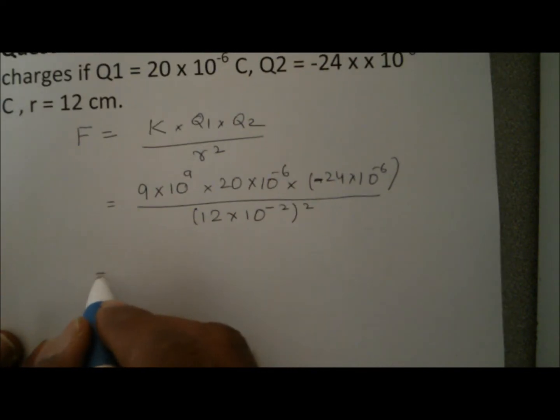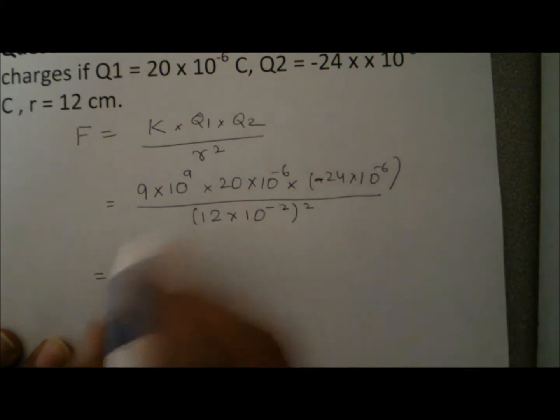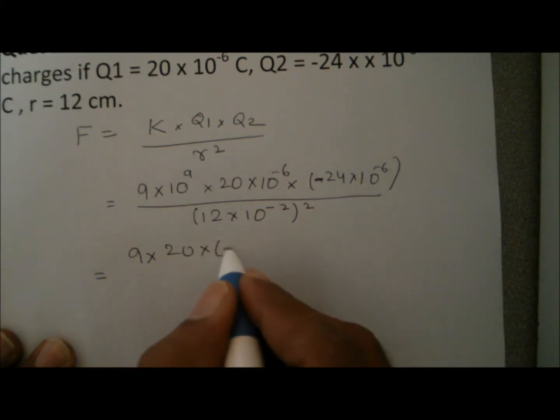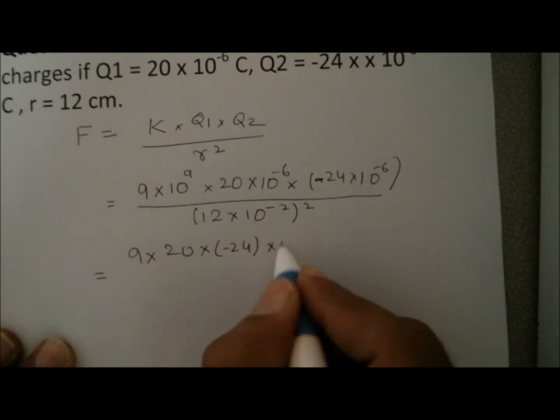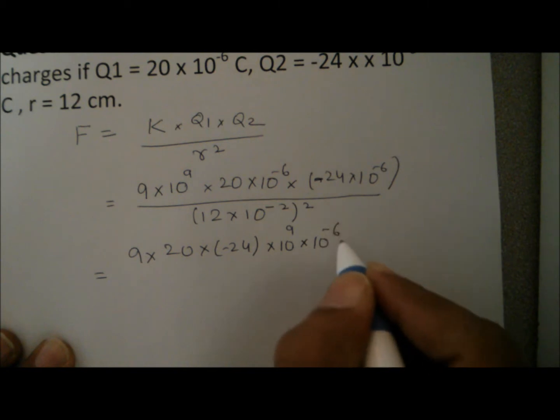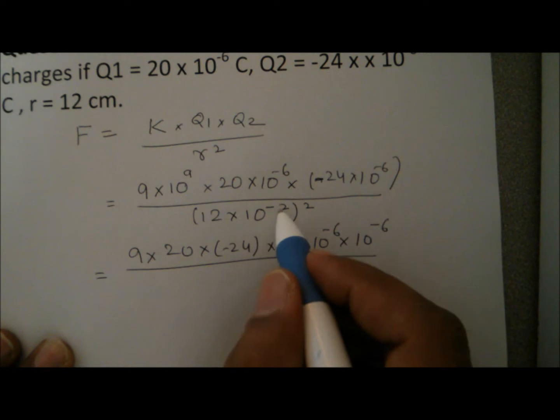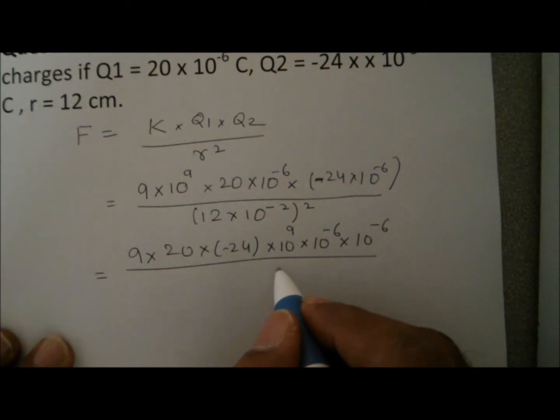To simplify it, we collect all the 10 to the powers in one place and other things at one place. So it's 9 into 20 into minus 24 multiplied by 10 to the power 9 multiplied by 10 to the power minus 6 multiplied by 10 to the power minus 6 divided by 10 to the power minus 2 into 10 to the power minus 2.